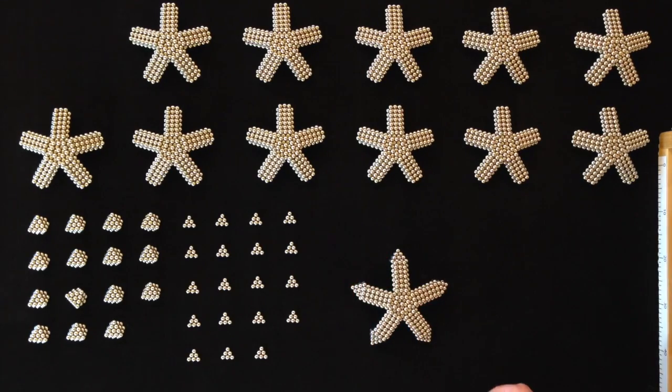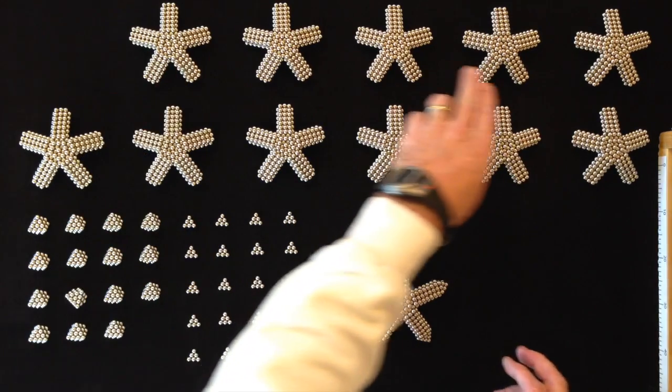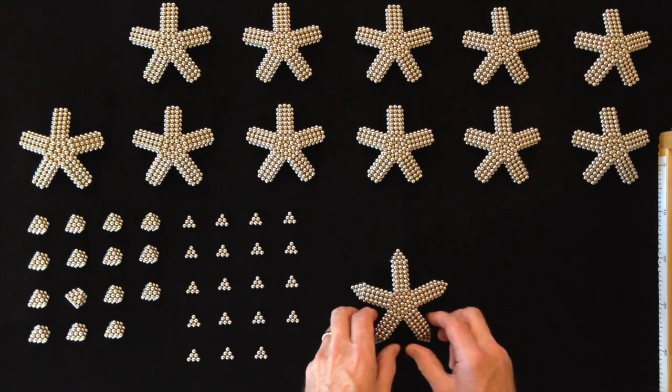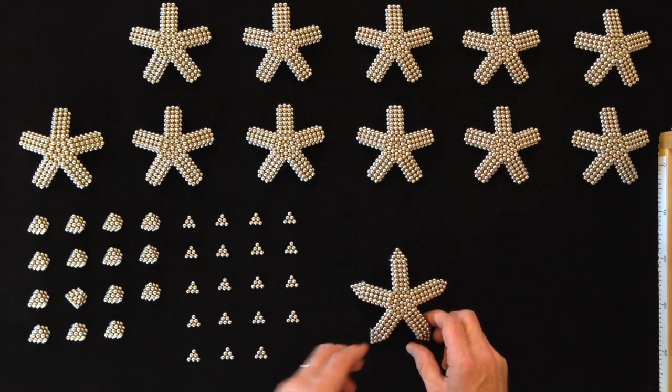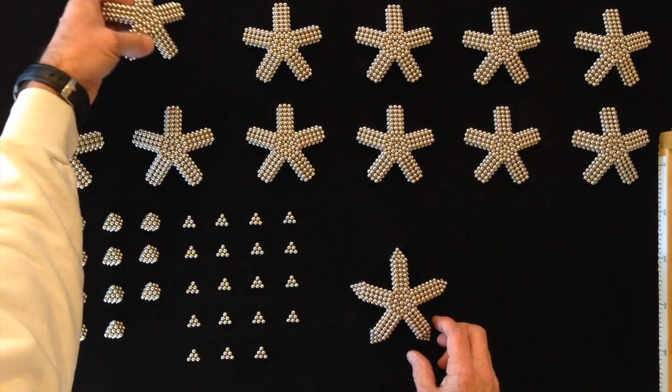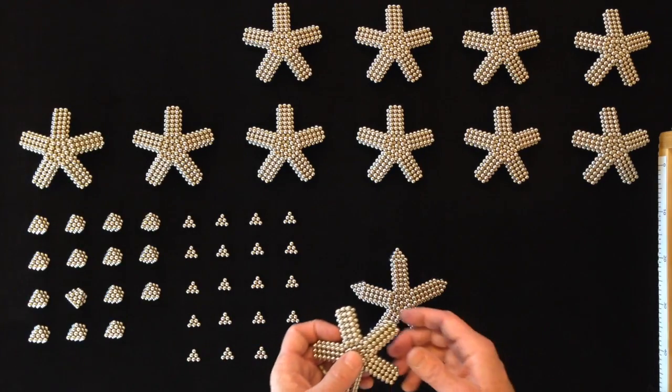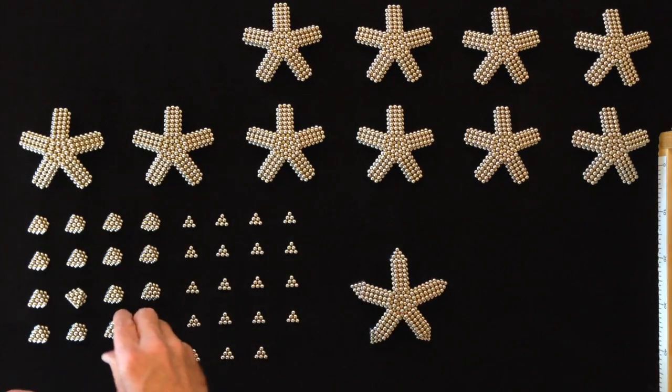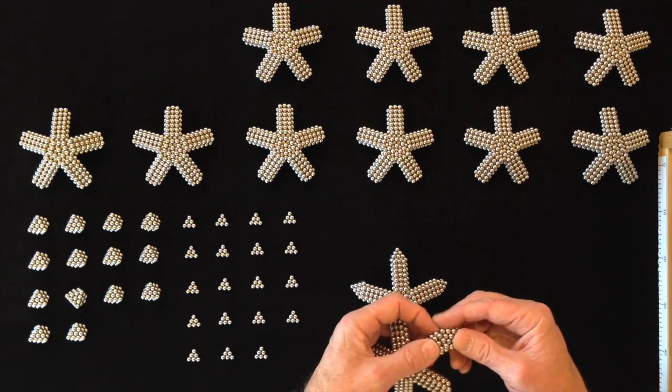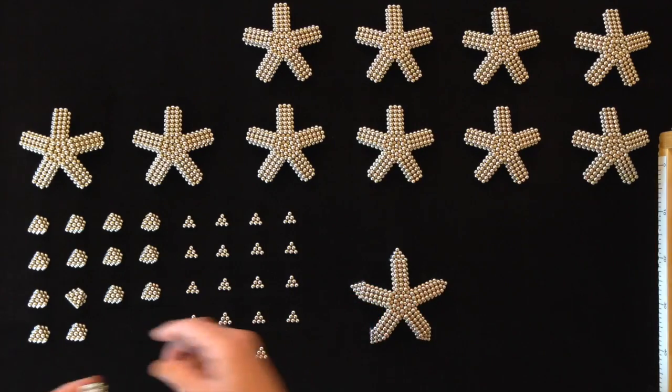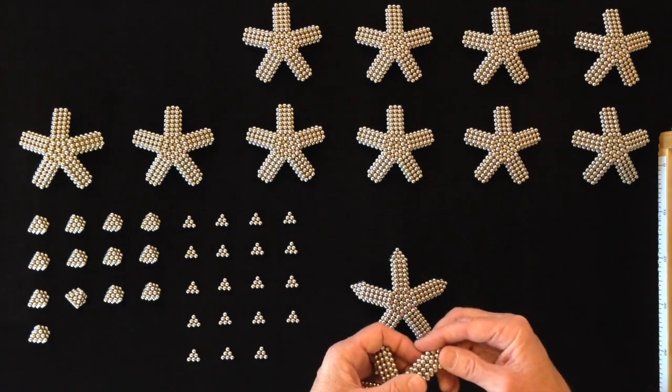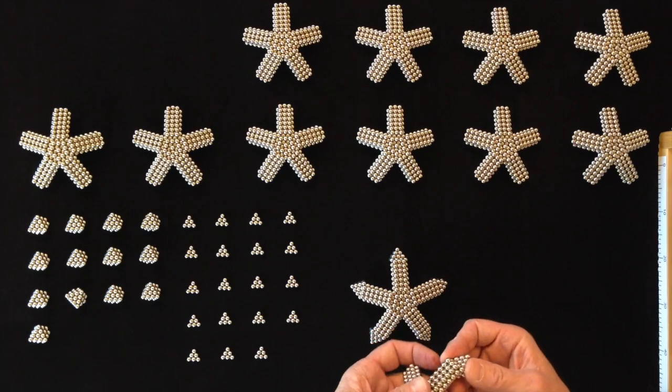That'll be our starting point for the shape. Now we're going to add five more of these starfish shapes onto this shape, and we will need to place vertices on two of their five sides.